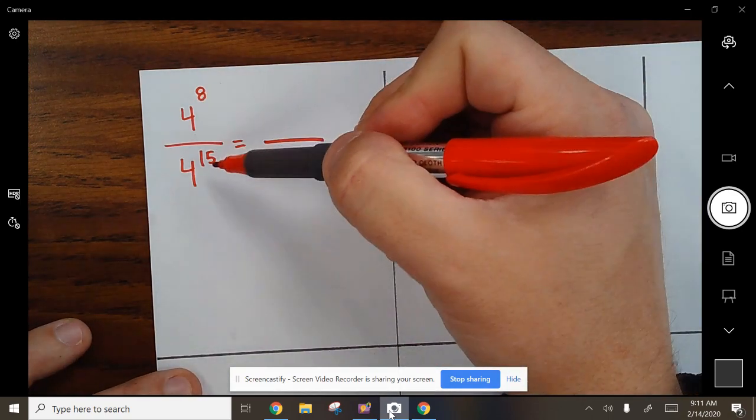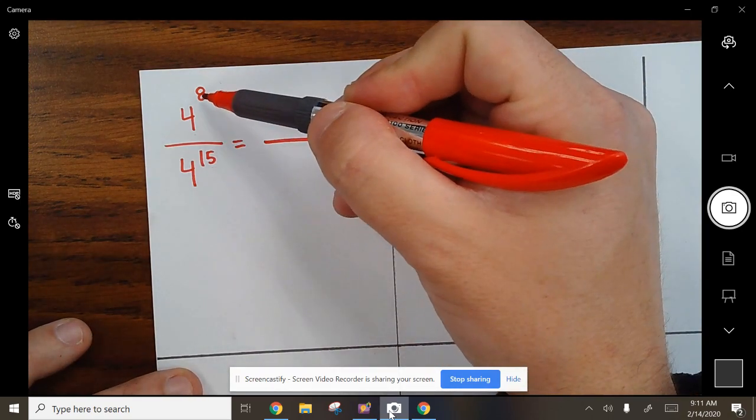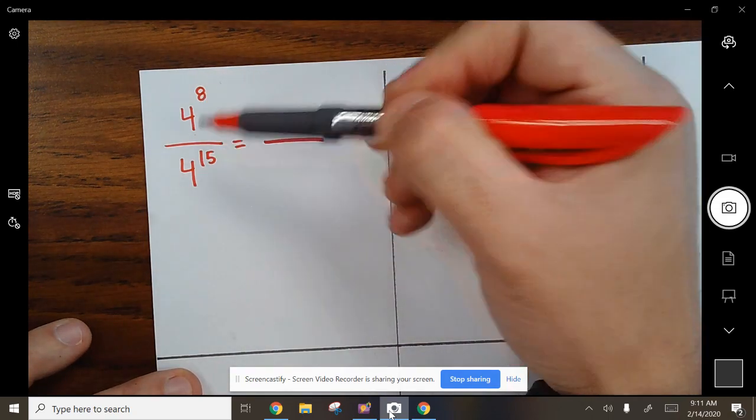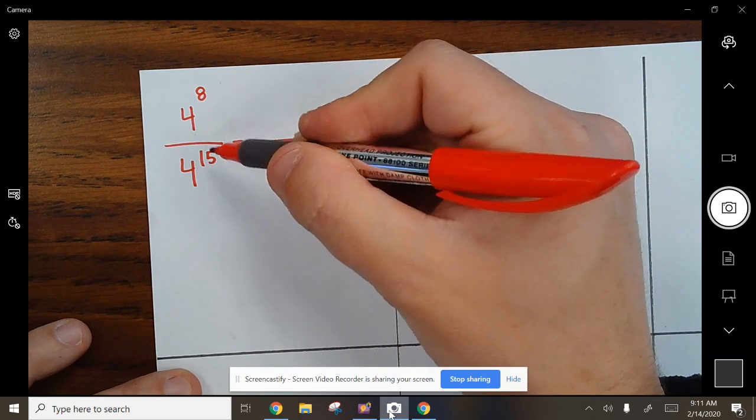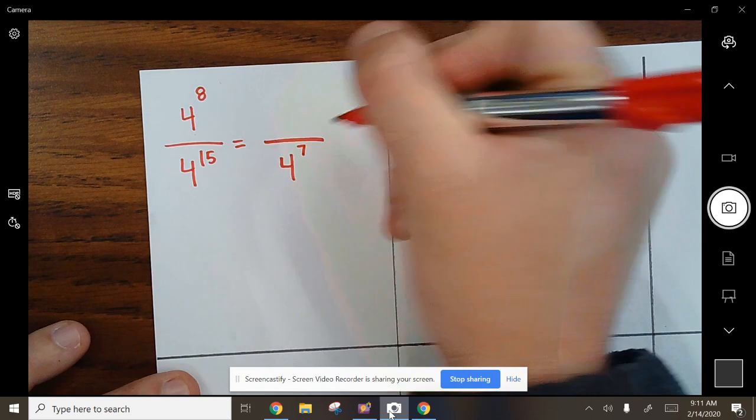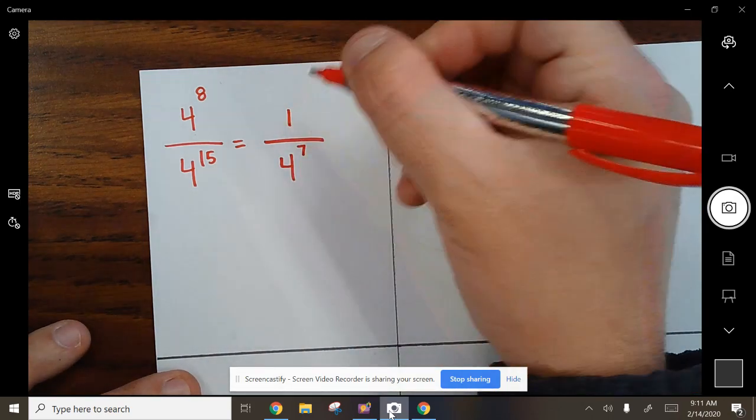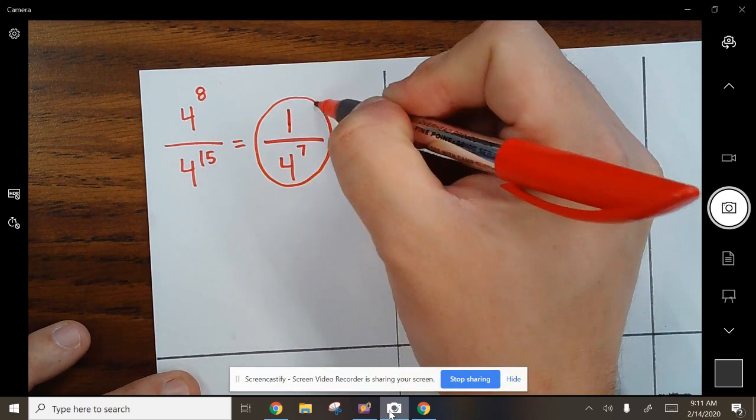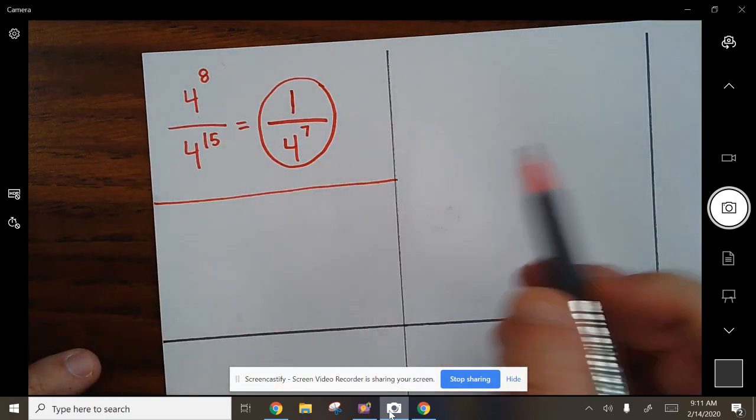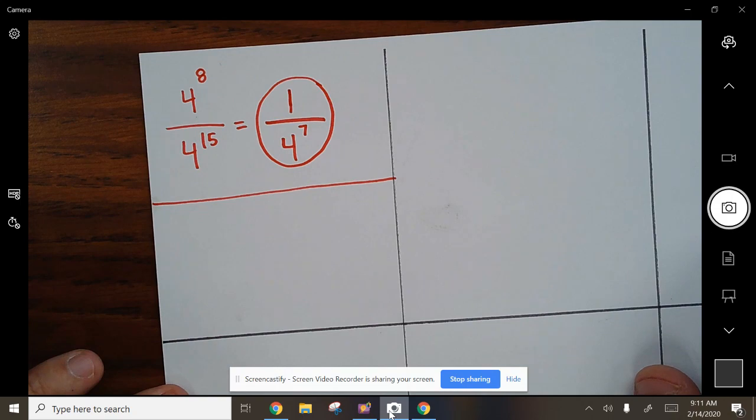The 15 beat the 8 up, so you're subtracting the 8 from 15. But who won, the top or the bottom? The bottom won by how much? By 7. And you put a 1 on top to hold it together, and that's your answer. These are going to be the easy ones today.